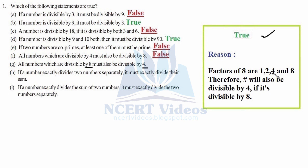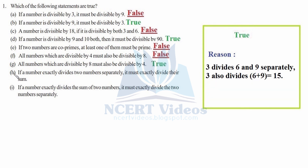Statement H: if a number exactly divides two numbers separately, it must exactly divide their sum. For example, three divides six and nine separately, so it must divide their sum. Six plus nine is fifteen, and fifteen is divisible by three, so H is true.